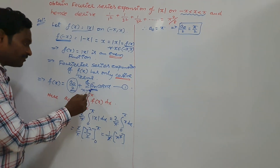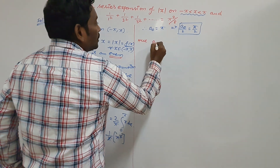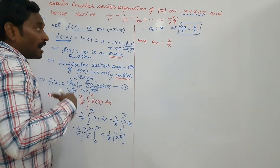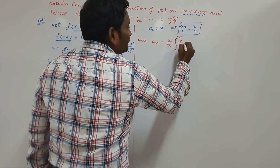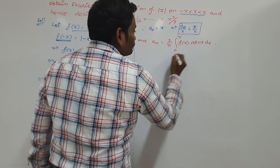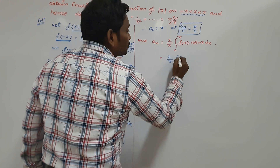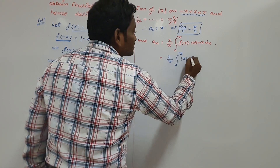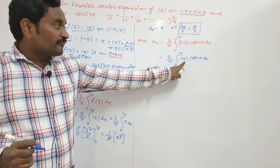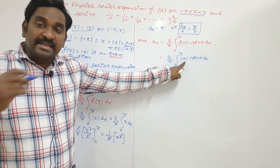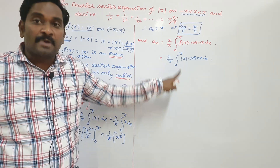Next, it is enough to find the value of aₙ. What is the formula for aₙ here? Here also aₙ equals 2 by pi — do not write 1 by pi because we are applying the even and odd concept — times the integral from 0 to pi of f of x into cos nx dx. Replace the value of f of x: 2 by pi times the integral from 0 to pi of modulus of x into cos nx dx. Since x is greater than 0, mod x is replaced by simply x.